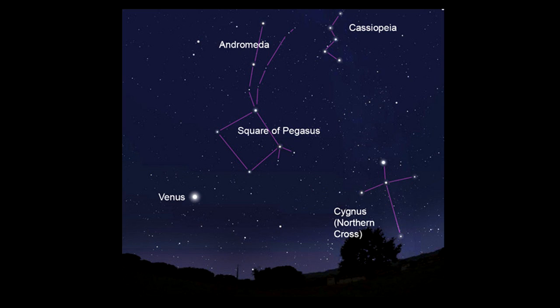Here is Cassiopeia, here is Andromeda and the Great Square of Pegasus again, the Northern Cross. These are all parts of constellations. The Northern Cross is easily visible, Cassiopeia, the beautiful W, the Great Square of Pegasus.